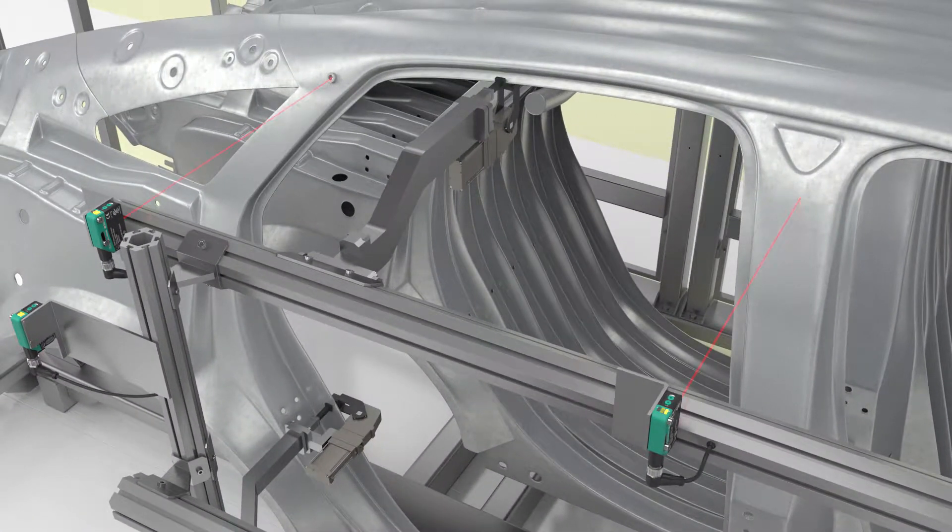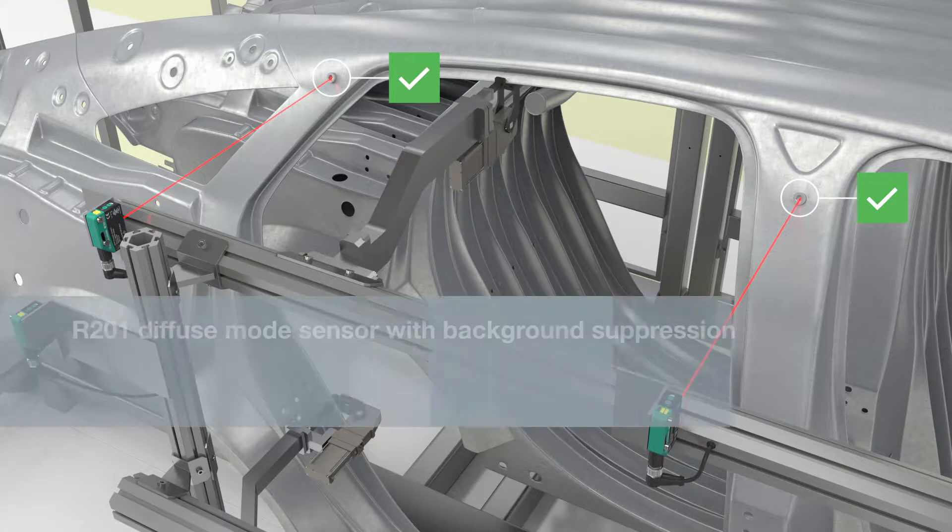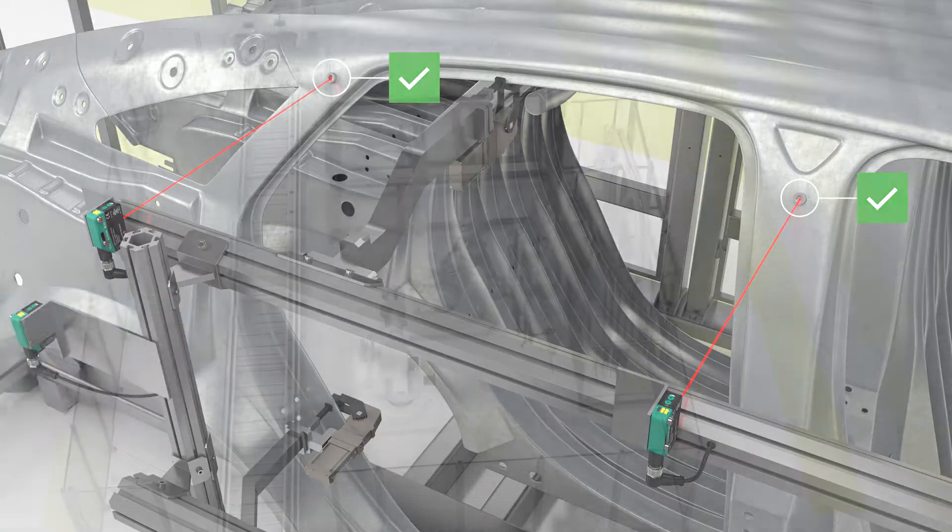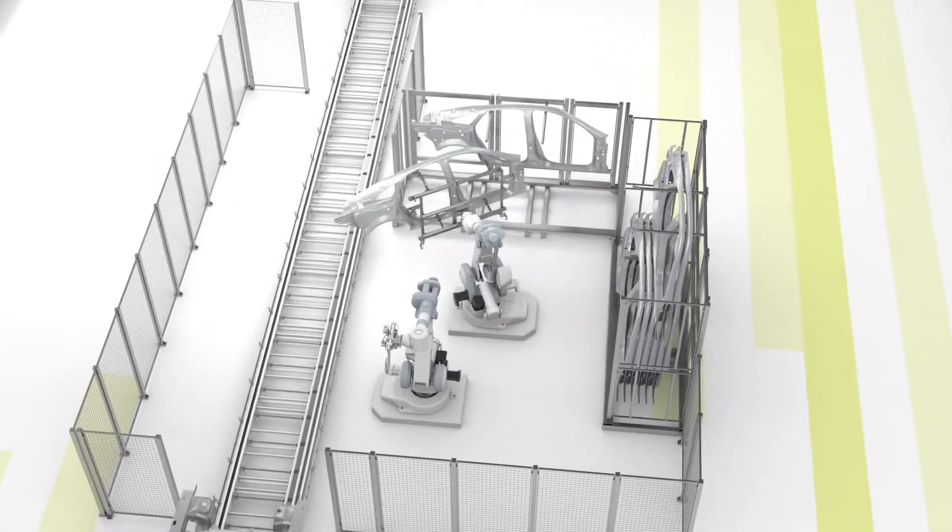Another two R201 sensors, in this case diffuse mode sensors with background suppression, check the workpiece for completeness. DuraBeam laser technology and the small circular light spot detect small objects, such as screws, to avoid delays in the process.